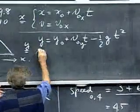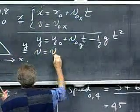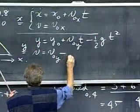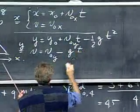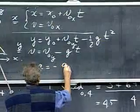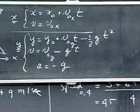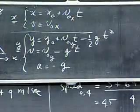Then the velocity in the y direction as a function of time would be the derivative, that is v zero y minus gt, and the acceleration equals minus g. So these are the three equations that govern the motion in the y direction.